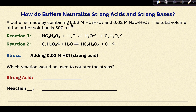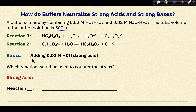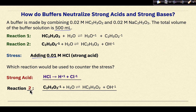A buffer is made by combining 0.02 molar HC2H3O2 and 0.02 molar NaC2H3O2. The total volume of the buffer solution is 500 milliliters. We have two reactions: the weak acid reacting with water to produce hydronium ions and the weak base, and the weak base reacting with water to form the weak acid and hydroxide ions. The stress in this situation is adding 0.01 molar of HCl, a strong acid. The ionization of HCl produces hydrogen ions and chloride ions, and if you chose reaction 2 to counter the stress, that is correct.